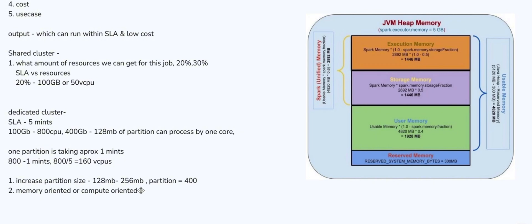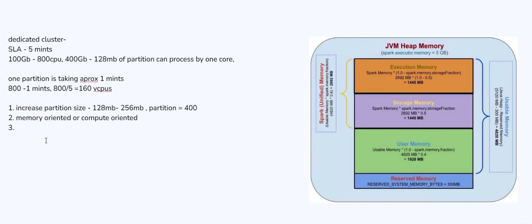In AWS, if it is a memory-oriented job you can choose R-type instances like R5 — the R-related family. If it is compute-oriented, you can choose C-family instances. This will help you choose the right type of instances to execute your job optimally. For a memory-oriented job, you can also use the spark memory fraction configuration — you can increase the storage memory fraction, spark.memory.fraction.